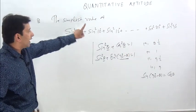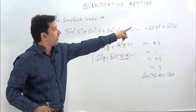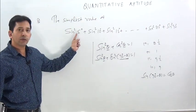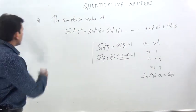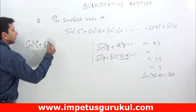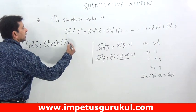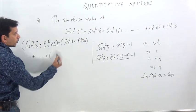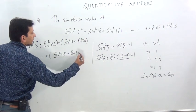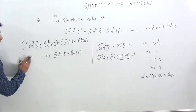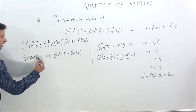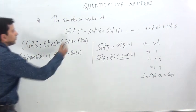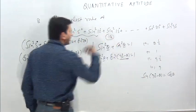Now pay attention: we have sin²5°, sin²10°, sin²15°, sin²80°, sin²85°, sin²90°. If we look at the range from 5° to 90°, there are 18 terms total. Now I will pair sin²5° with sin²85°, sin²10° with sin²80°, and so on. The only terms without a pair are sin²45° and sin²90°. The pair just before would be sin²40° + sin²50°. Total number of factors is 18, meaning 9 pairs.